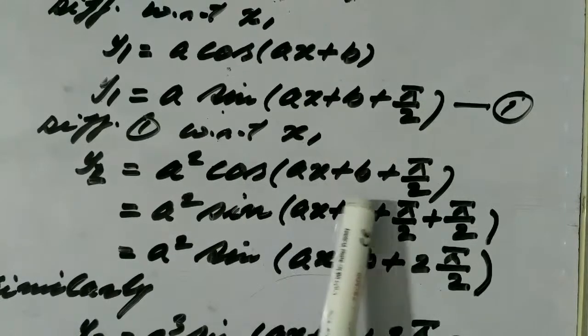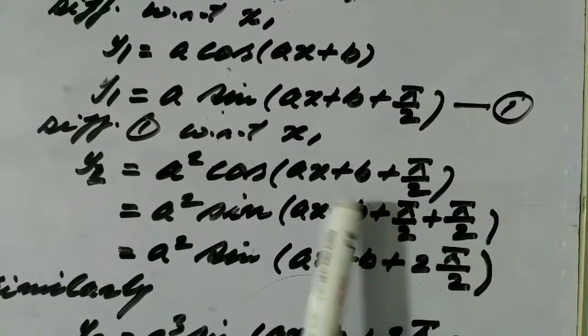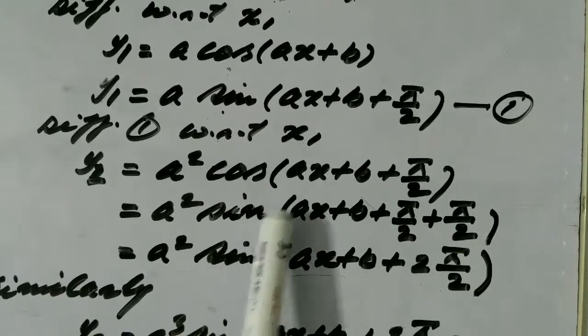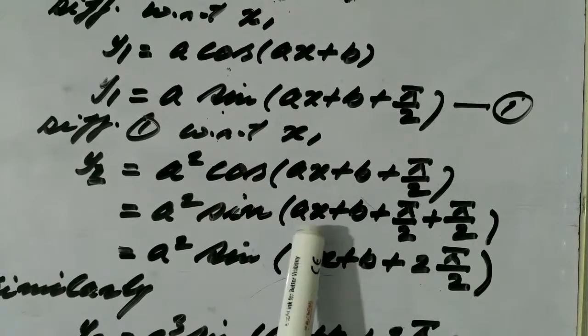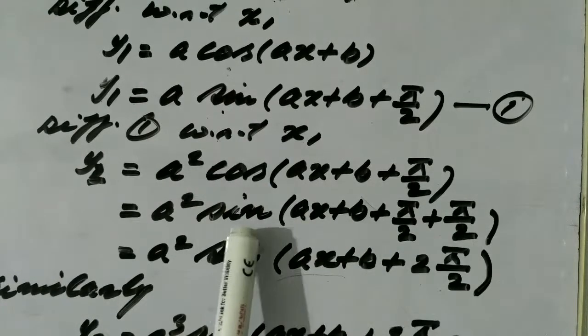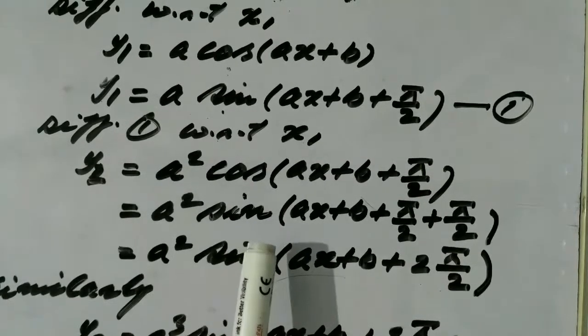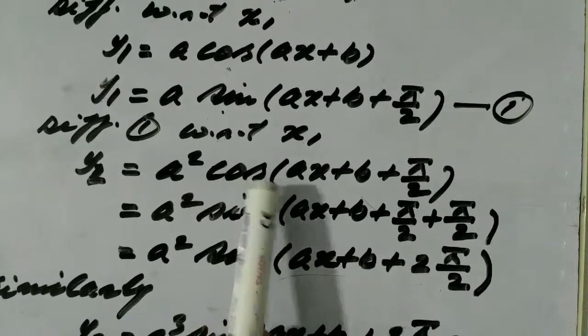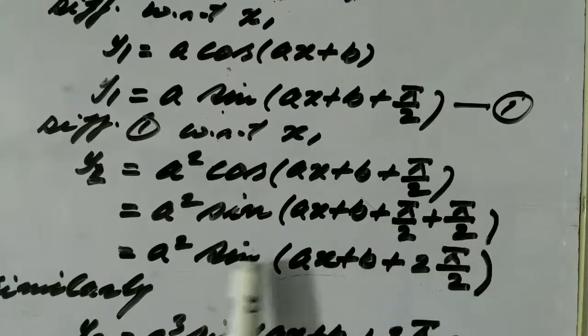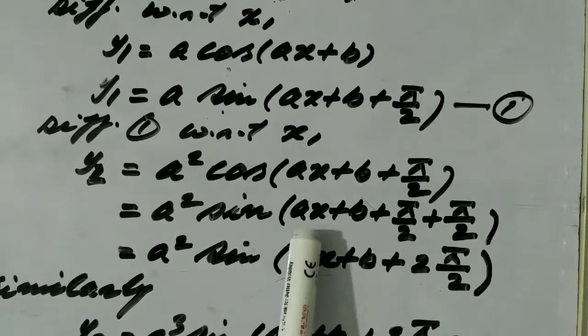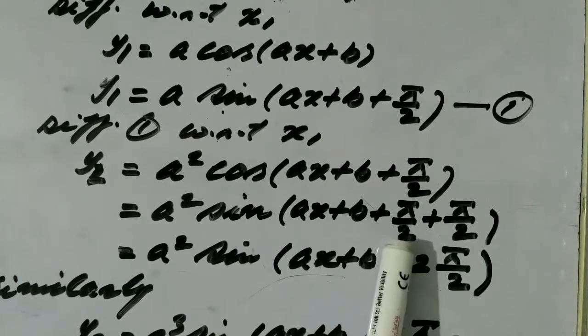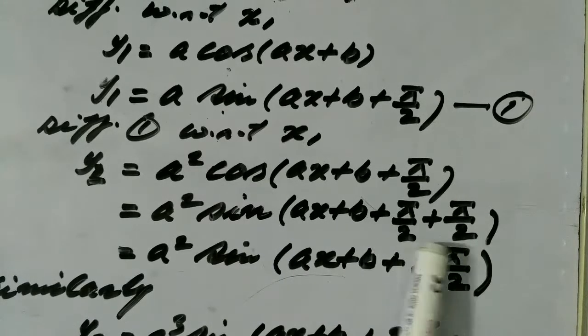Cos(ax+b+π/2), and in order to bring back this cos into sin again, we need to add π/2 in the angle so that sin(θ+90) or sin(90+θ) is equal to cos θ. So we may write cos(ax+b+π/2) as sin(ax+b+π/2+π/2).